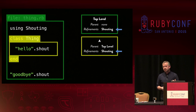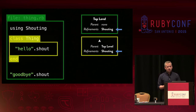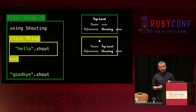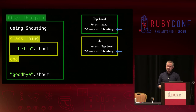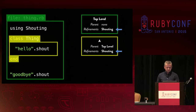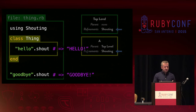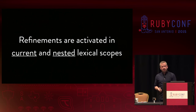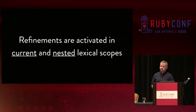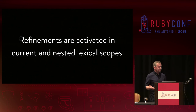If we had called using Shouting outside the class at the top of the file, our refined method works both inside and outside the class, because we're activating the refinement for the top level lexical scope. Once a refinement is activated, it's activated for all nested lexical scopes. A call to using at the top of the file means it will work everywhere in that file. So this is our first principle: when we activate a refinement with the using method, that refinement is active in the current and any nested lexical scopes. However, once we leave that scope, the refinement is no longer activated and Ruby behaves just like it did before.